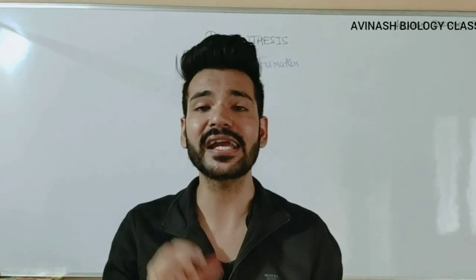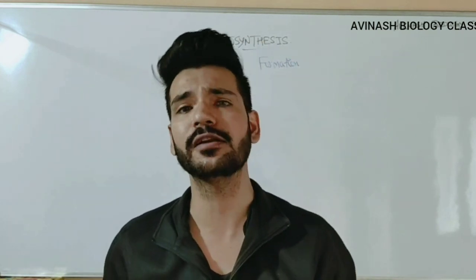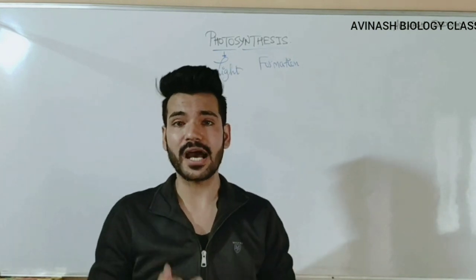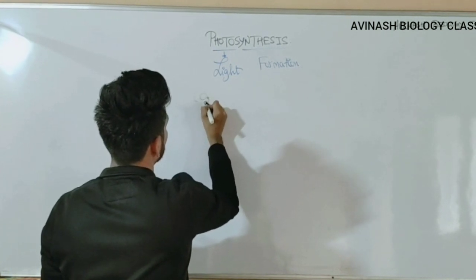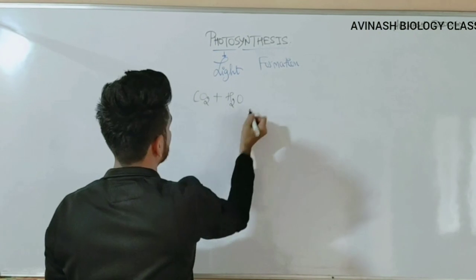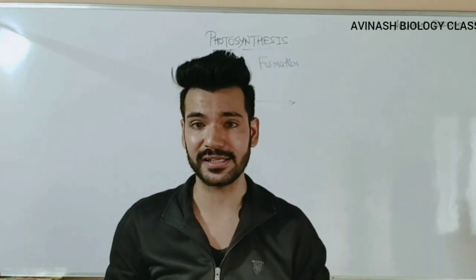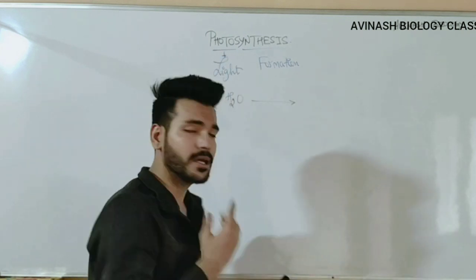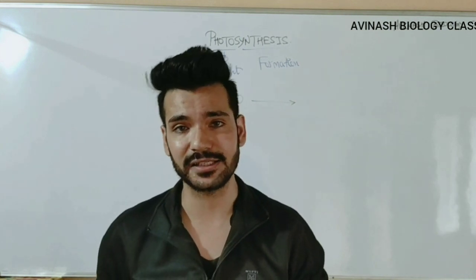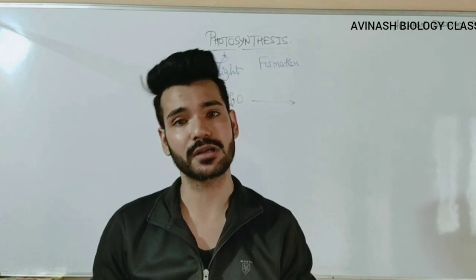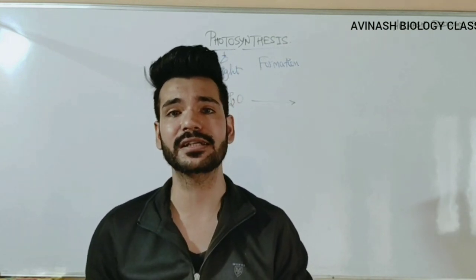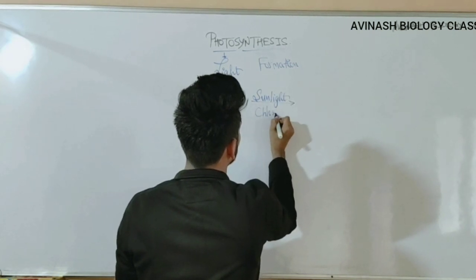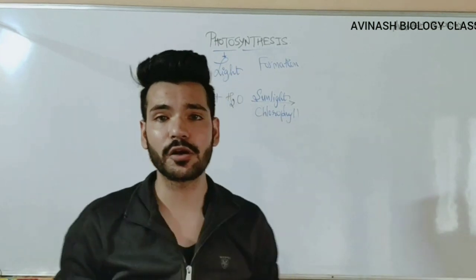अब हम directly photosynthesis का equation देख लेते हैं, क्योंकि एक biochemical process में equation involved होगा ही। Plants photosynthesis करने के लिए carbon dioxide and water को combine करते हैं — ये photosynthesis के raw materials हैं। Carbon dioxide और water दोनों inorganic substances हैं। Photosynthesis करने के लिए plants को chlorophyll and sunlight की जरूरत होती है। Chlorophyll वो main green pigment है जो sun की energy को trap करता है, और sunlight energy का source है।